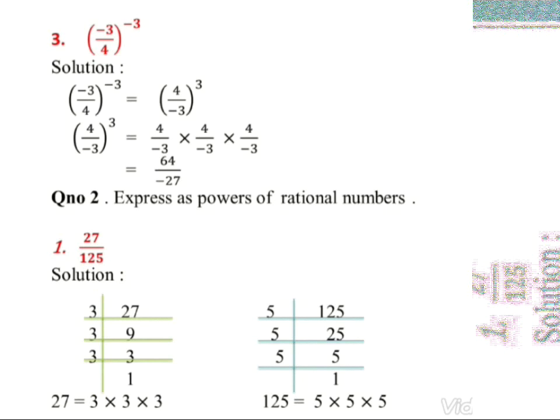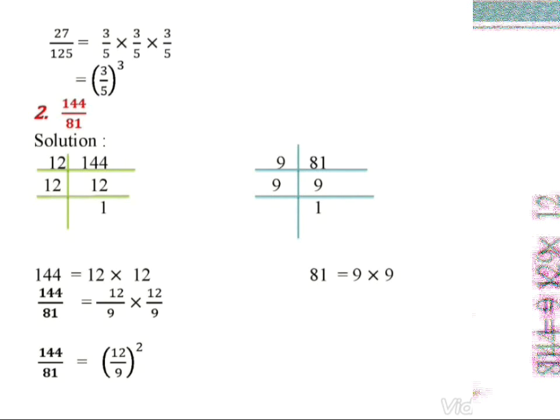The first part is 27/125. Find the factors of 27 and 125. For 27: 3 divides 27 → 3×3×3, so 27 = 3³. For 125: 5×5×5 = 125, so 125 = 5³. Therefore 27/125 = (3/5) × (3/5) × (3/5), which means 27/125 = (3/5)³.